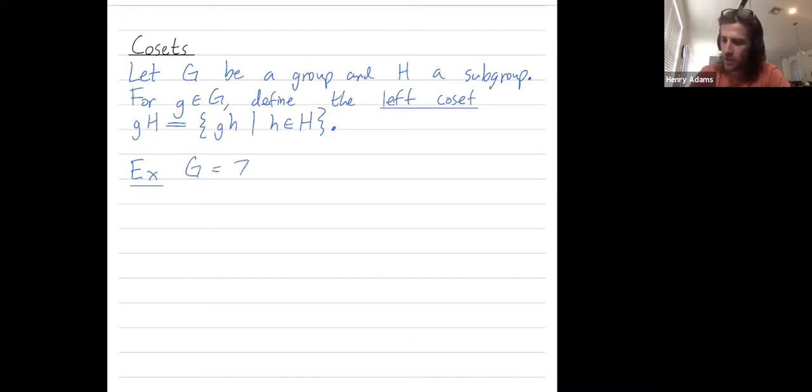Let my group be Z mod 12Z and let H be this cyclic subgroup generated by 3, which contains 3, 6, 9, and 12, but 12 is 0.